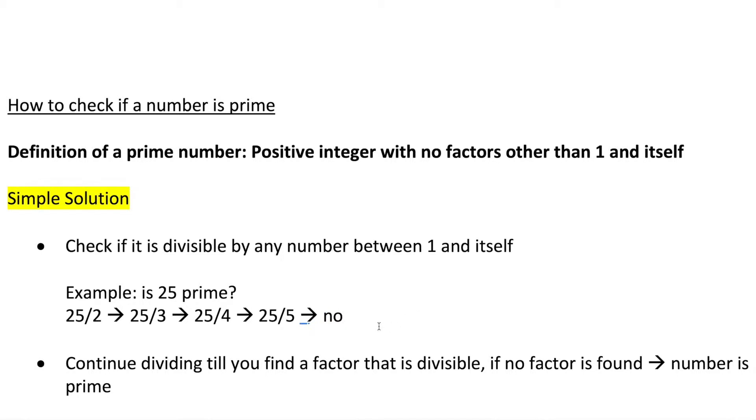Ultimately, for any number, you're going to continue dividing it until you find a factor that is divisible. And if no factor is found, that means that the number is prime.